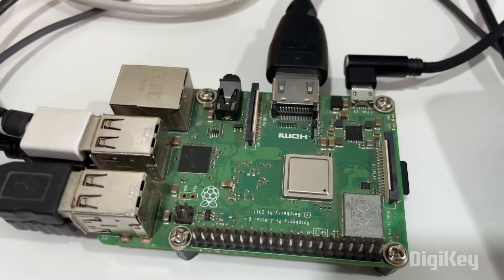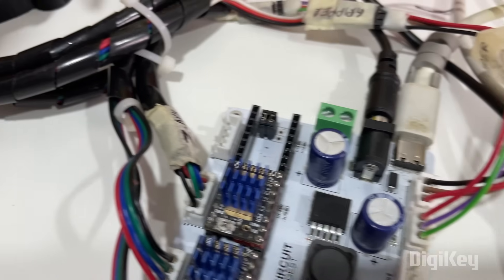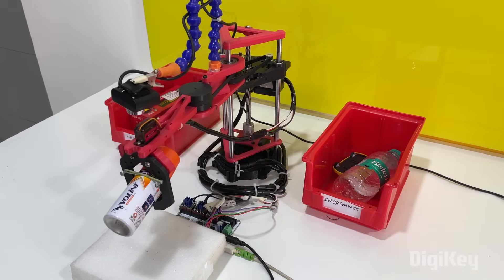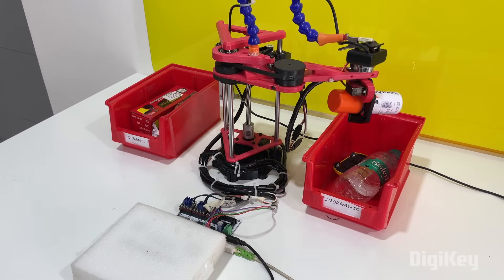How the setup works is the Raspberry Pi monitors the object placed in front of the camera and uses machine learning to classify the object as organic or inorganic waste. This result is then given to the ESP32 controller board through serial communication which then instructs the robotic arm to pick up the waste and place it in respective bins.